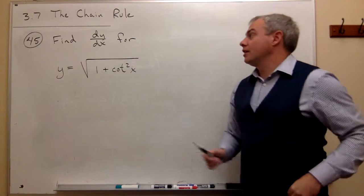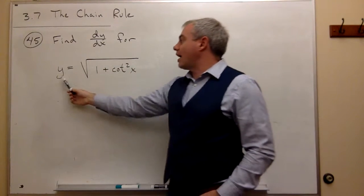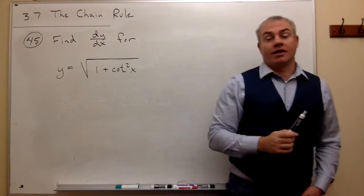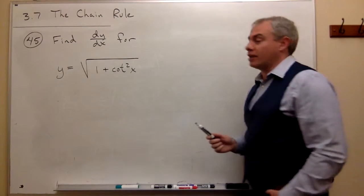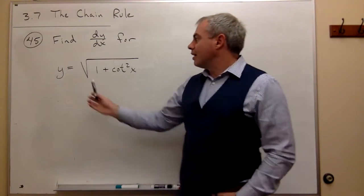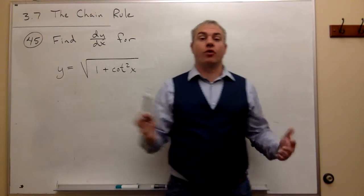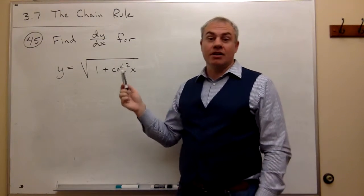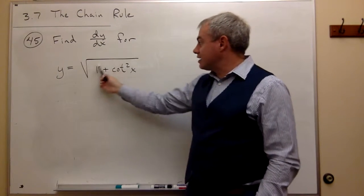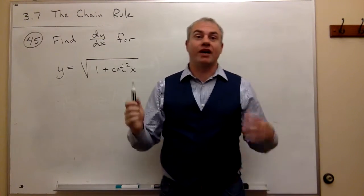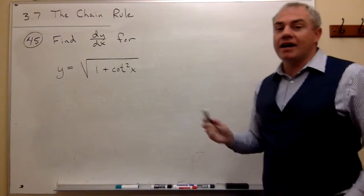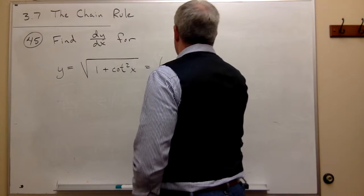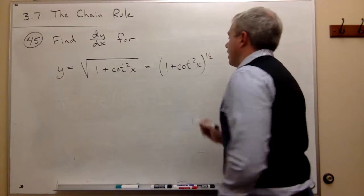In problem number 45, I'd like to find dy/dx for y equals the square root of 1 plus cotangent squared of x. The first thing I see when I look at this problem is what's the outermost function — what happens last. The last thing that happens is the square root. Everything else is done inside and then we square root it. You could also write it as 1 plus cotangent squared of x raised to the one-half power.